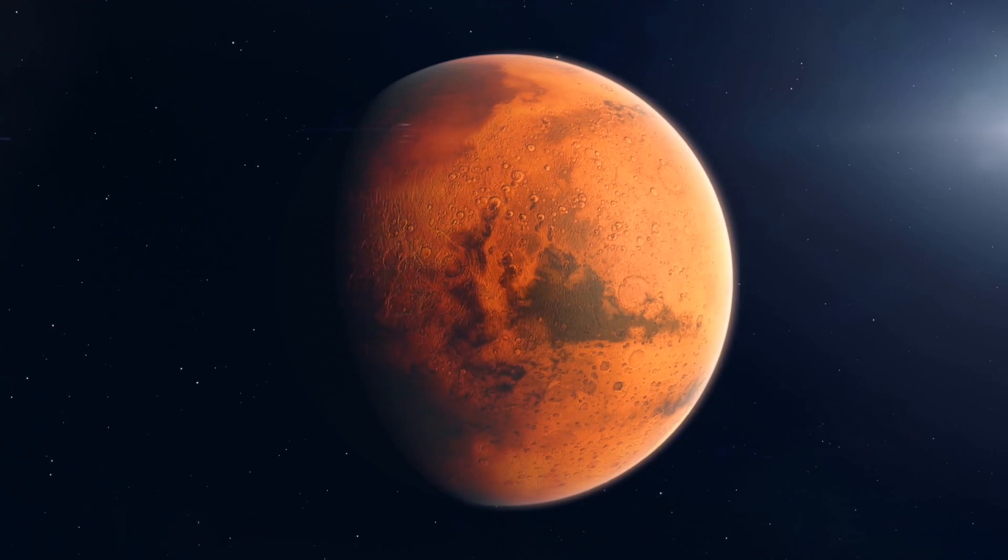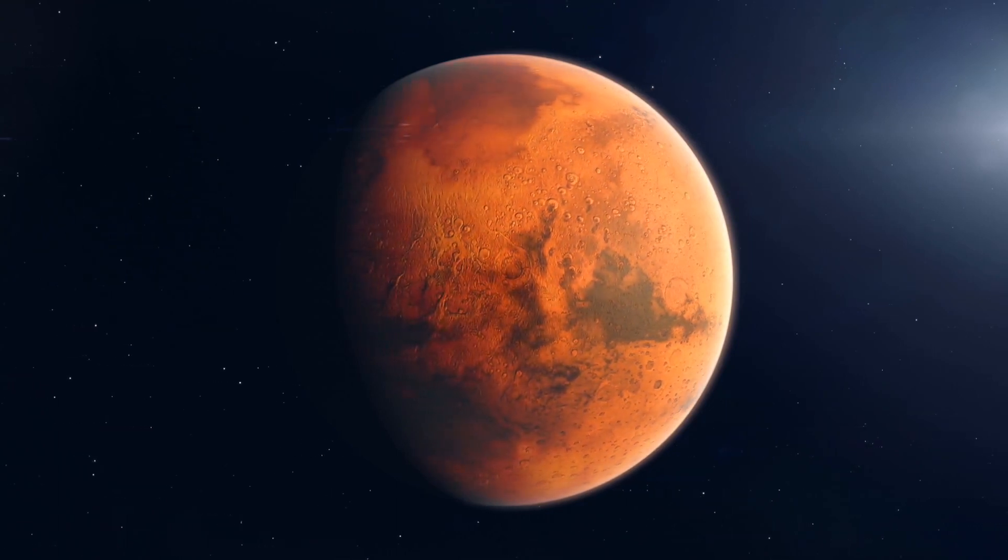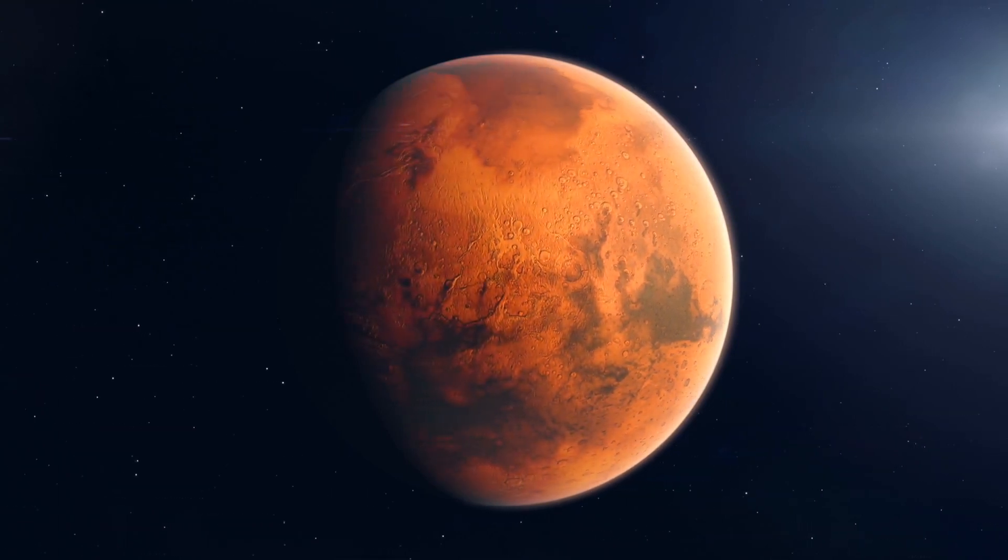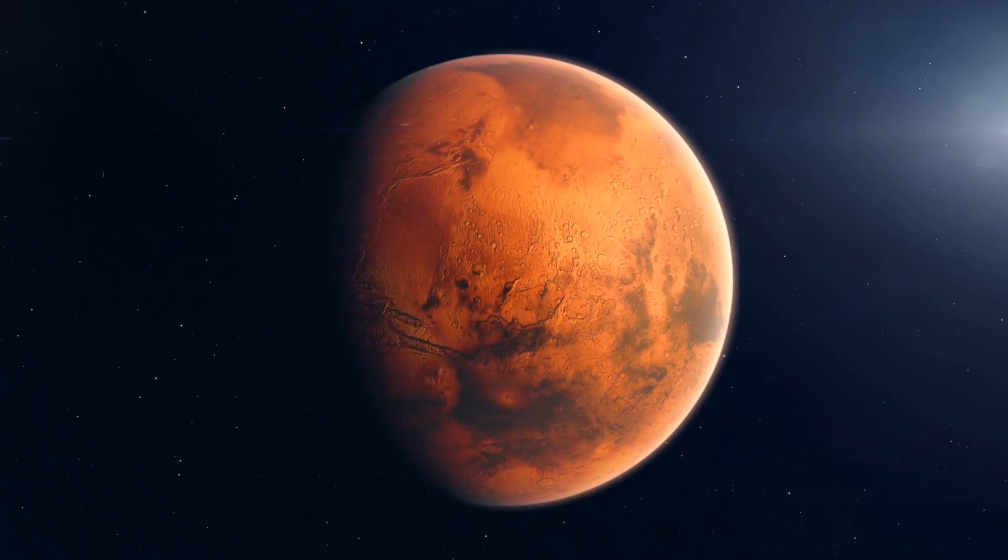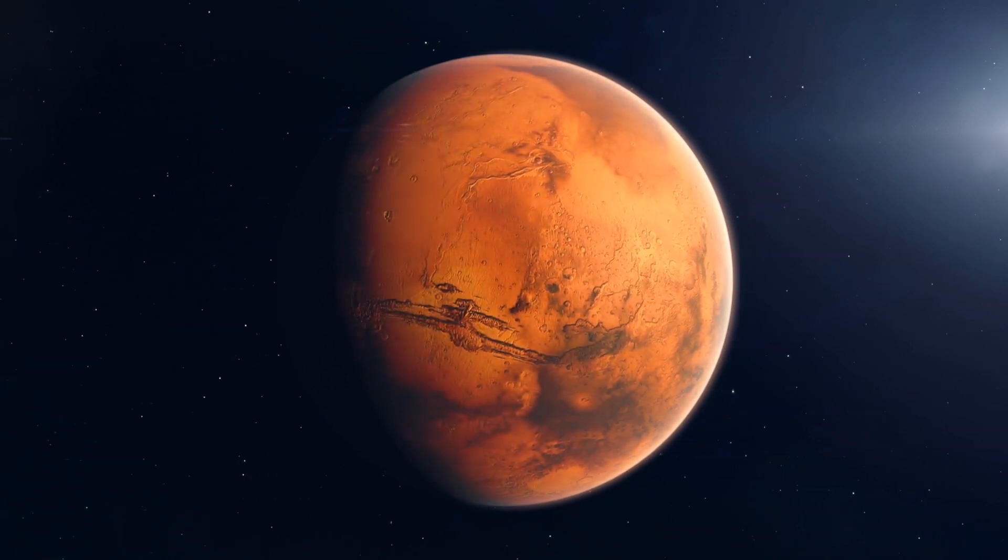Mars has a rotation period similar to Earth. It takes 24.6 Earth hours for Mars to complete one rotation, so a day on Mars is only slightly longer than a day on Earth.